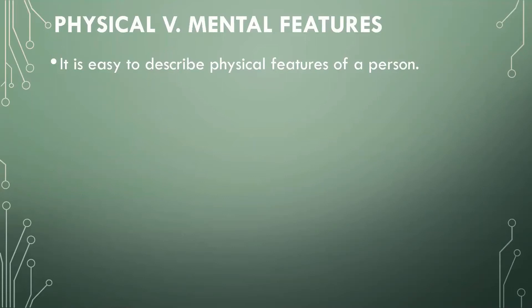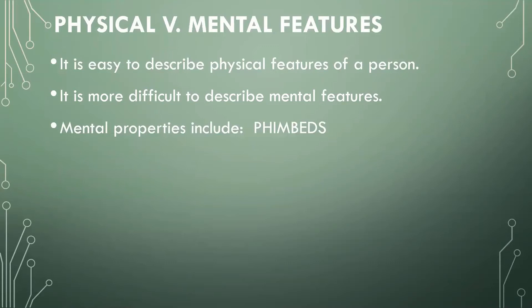It's fairly easy to describe these kinds of things. But it's much more difficult to describe mental features from observation, externally at least. Mental properties or mental states include what I'm putting as a single word acronym — the initial letters — it's just FEMBEDS. I thought that seemed easy to remember. Each of these letters stands for one kind of mental property, mental state.